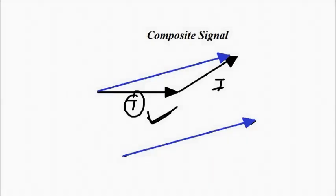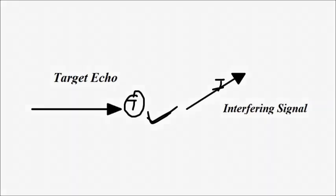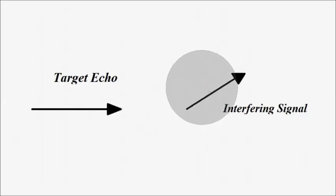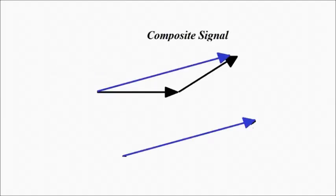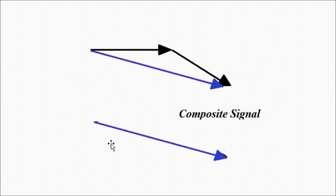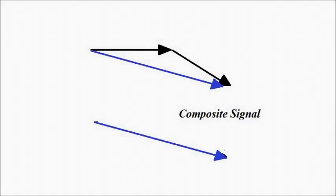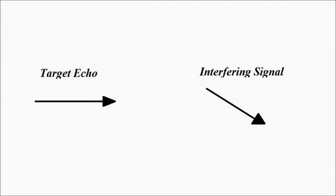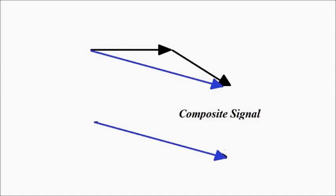The target echo signal is what we want, and it is the job of the signal processing circuitry to extract this target echo signal from the composite signal. For instance, if the target echo signal points in one direction and the clutter signal in another, the display shows the resultant composite vector. The signal processing circuitry must resolve it into its components and recover the original target echo signal.